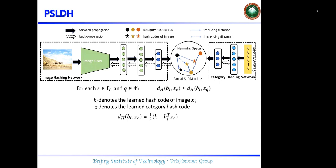The first step is training a category hashing network, which is used to generate a discriminative compact hash code for each category. After training the category hashing network, the learned category hash codes contain sufficient semantic information of their corresponding categories.